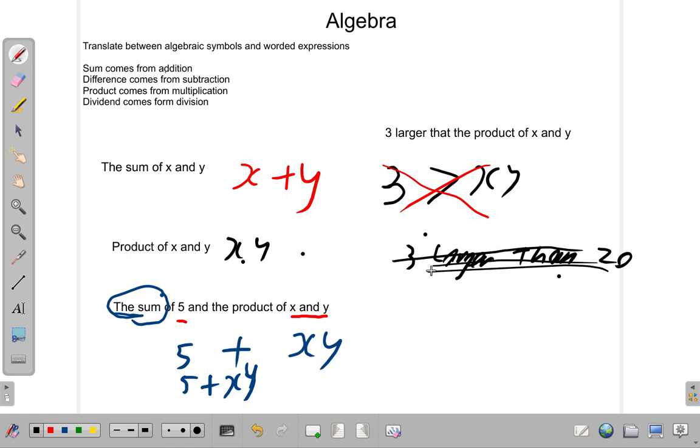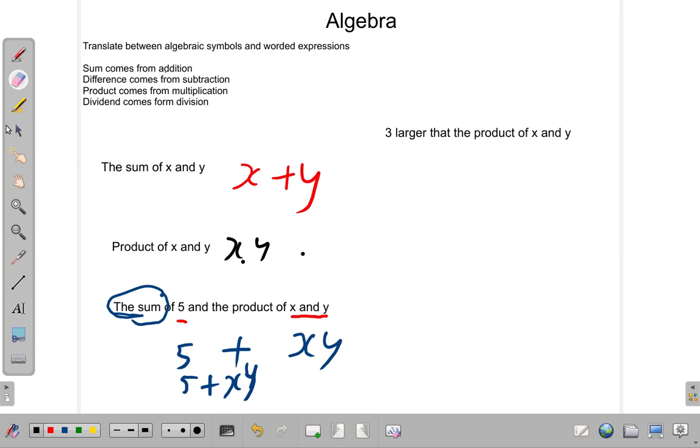Now let's look at what we have up here, what this is asking for. Three larger than the product of x and y. The product of x and y is xy. Three larger than that would mean you have xy and you have three more, because three larger is saying three more. So it's 3 plus xy. You could also have it as xy plus 3. So that's what you have there. Three larger than the product of x and y.